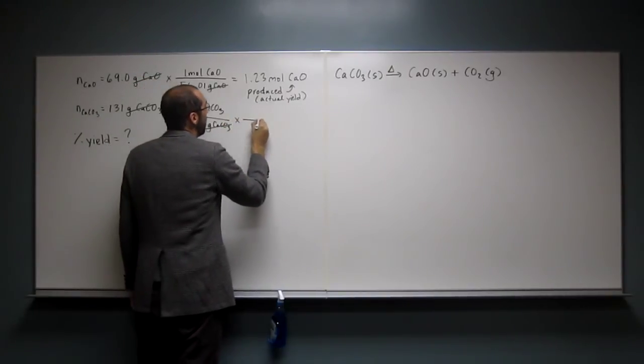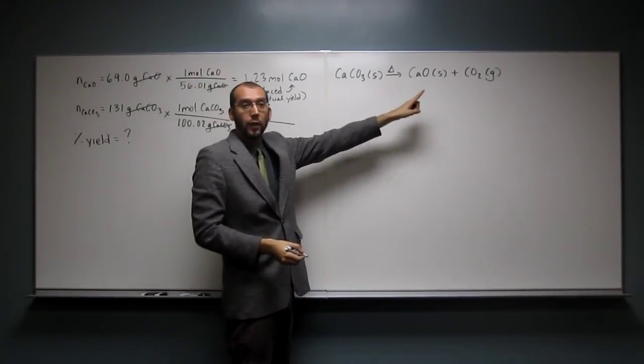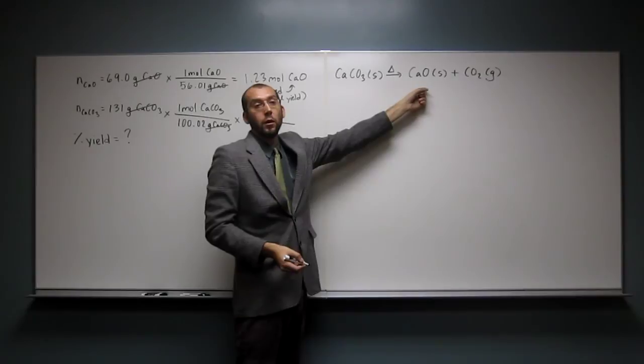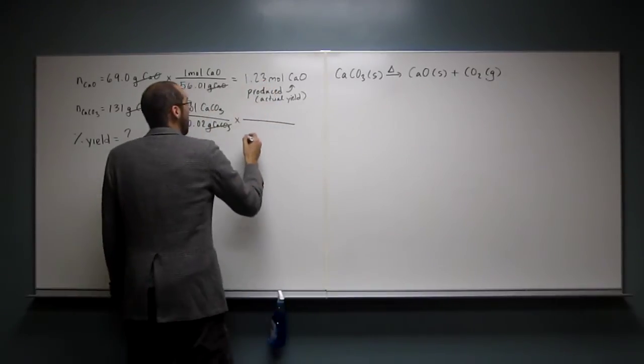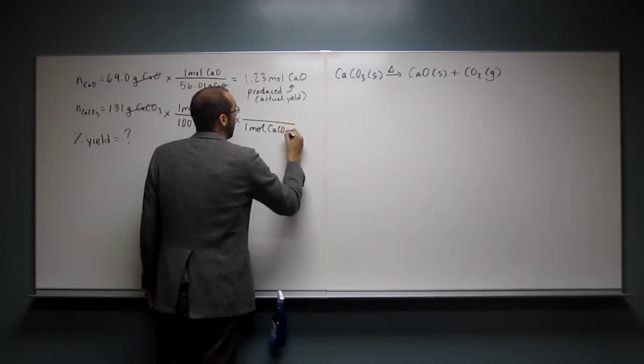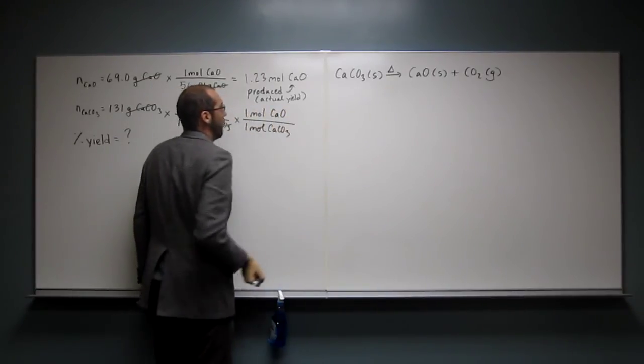So that theoretical yield. Where do we get that molar ratio? We look over at the reaction equation. For every one mole of calcium carbonate goes to one mole of calcium oxide. Like that.